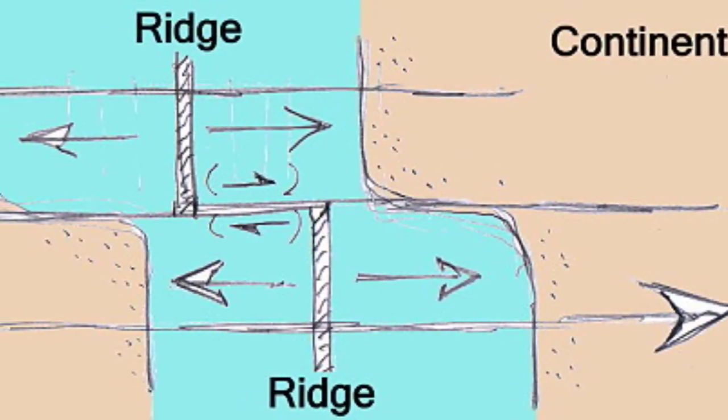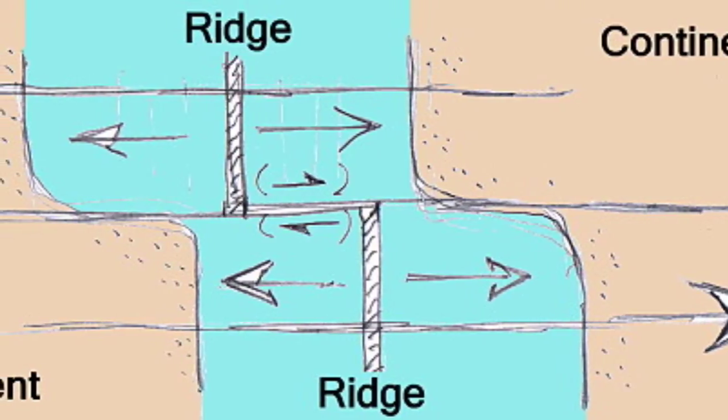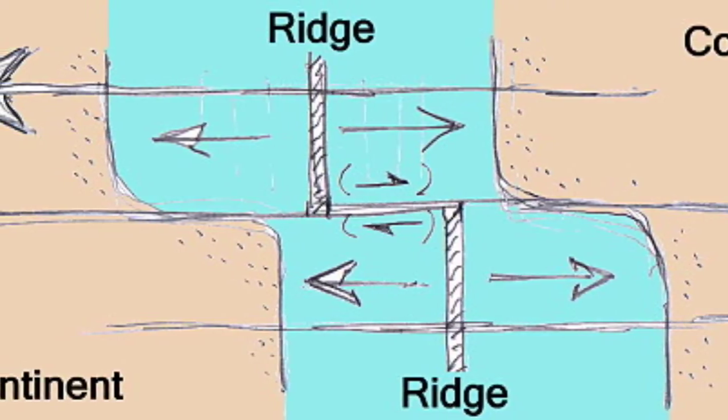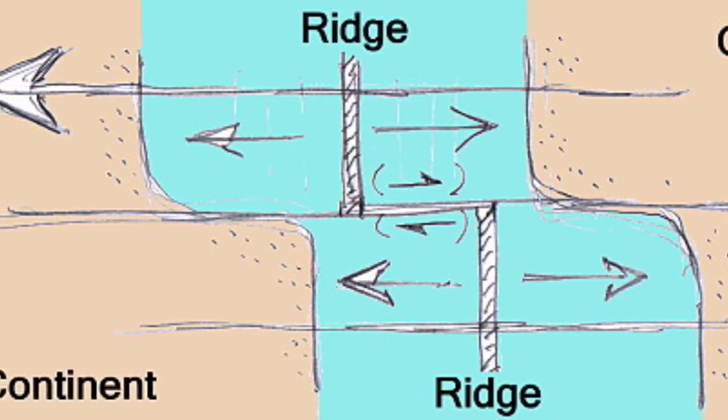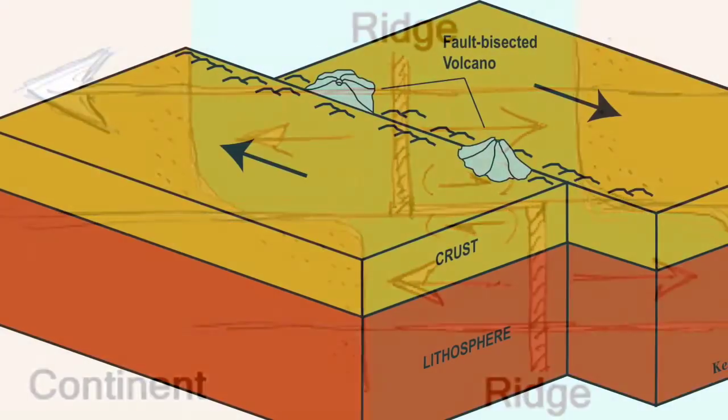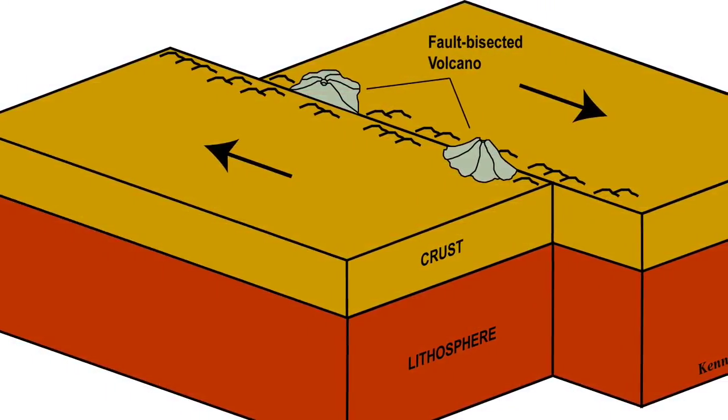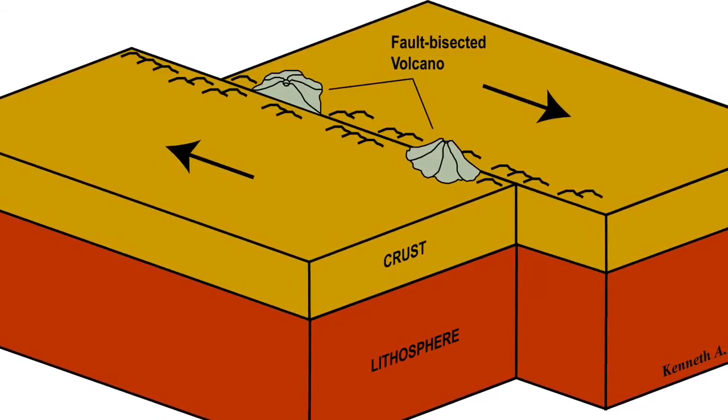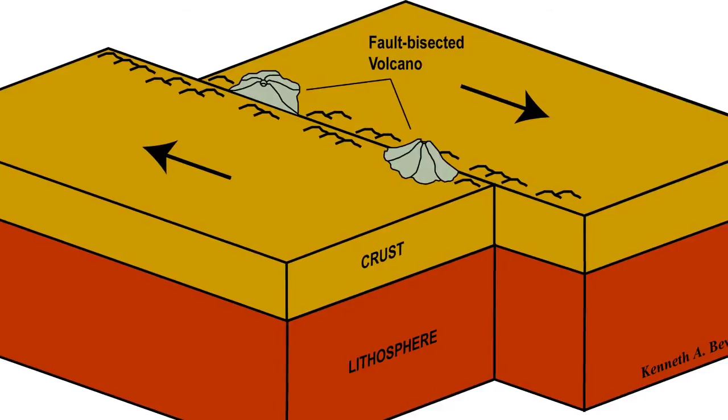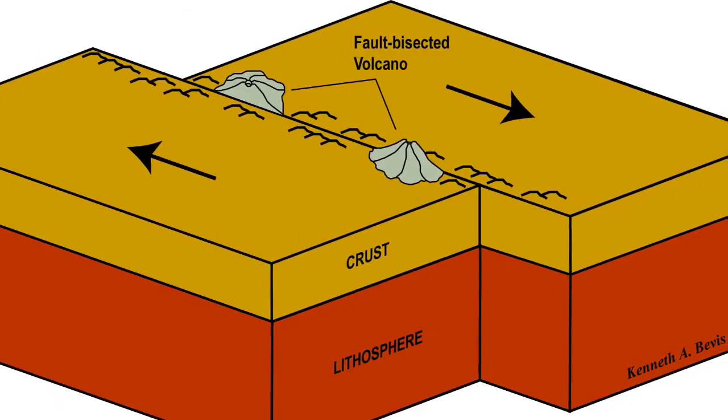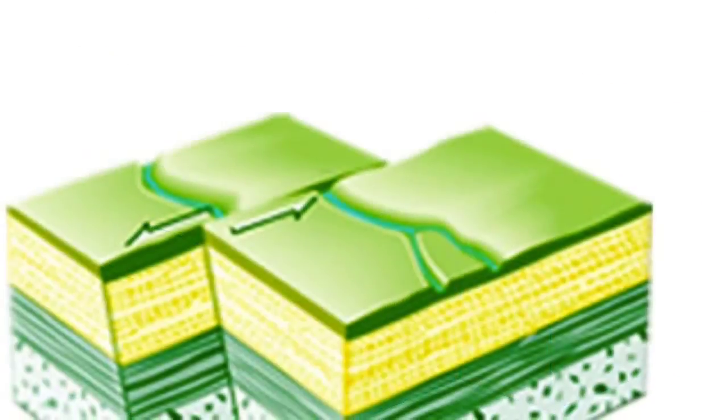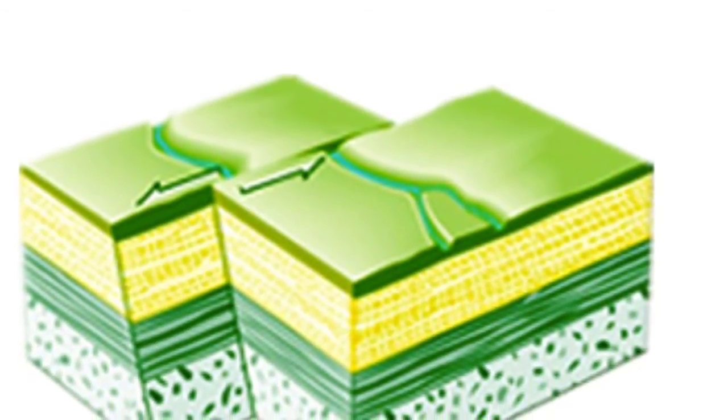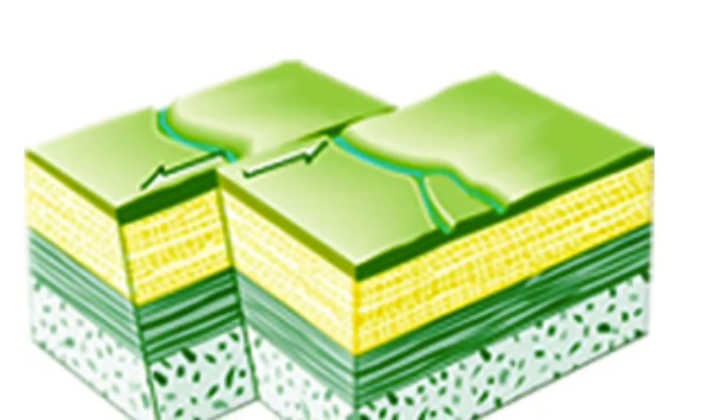Last but not least, we have the transform interactions. Basically all this is is a parallel movement. These plates slide against each other, which really doesn't create anything too major except, well I guess major because it creates massive earthquakes. There's really no subduction. All these are doing is plates just sliding against each other, and that's basically what a transform interaction is.